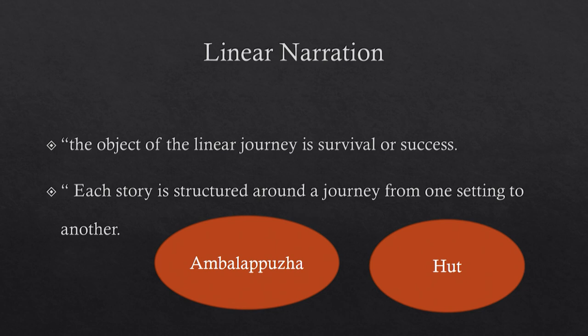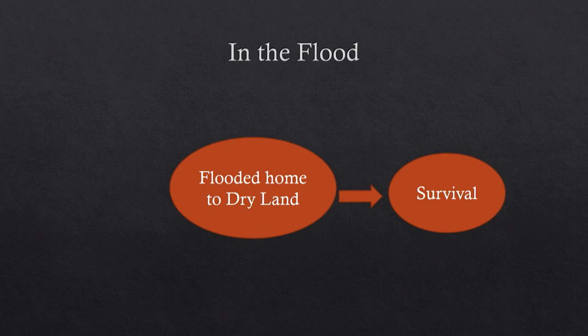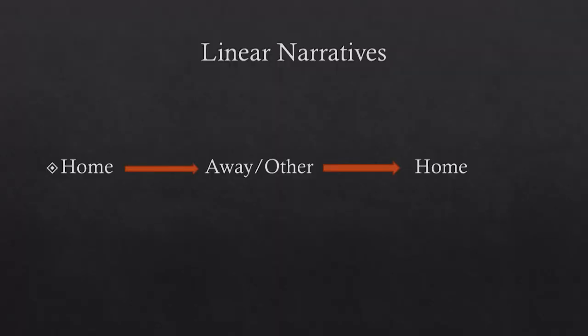Each journey in a linear narration is structured around a movement from one setting to another. In the case of Chenin in 'In the Flood,' Chenin moves from his flooded hut to Ambulapura, and then eventually returns from Ambulapura to his own hut at the end of the story. There is a movement from flooded home to dry land — from a crisis situation to one where Chenin survives. Linear narratives generally move from the home space to another space and then return once the hero has attained maturity, survived, or succeeded.